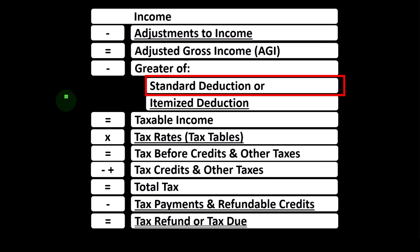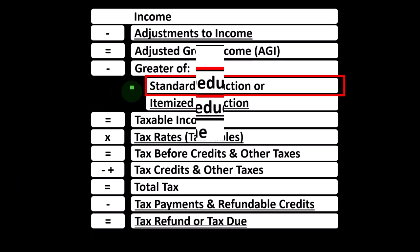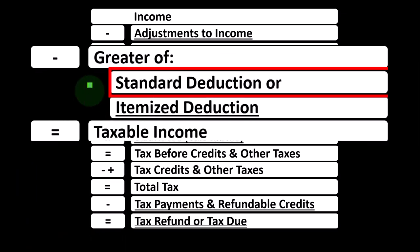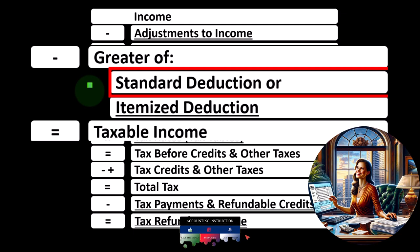If we have a change in a dependent, it could have an impact on the filing status, which could have an impact on the standard deduction. This will not always be the case, but sometimes could be the case. For example, if we have a single filer who then has a dependent, that possibly could push them from a single filing status to a head of household status, in which case you could have a change to the standard deduction as we've seen in prior presentations.